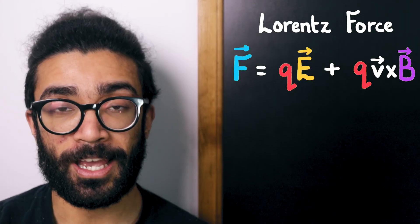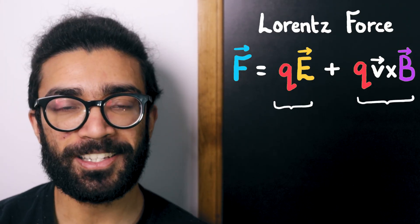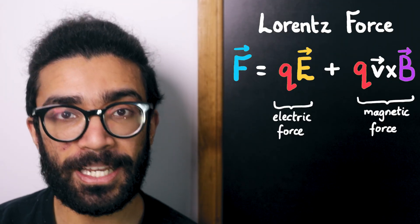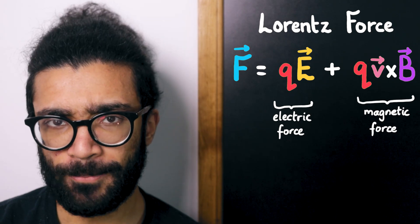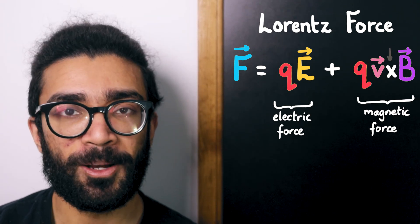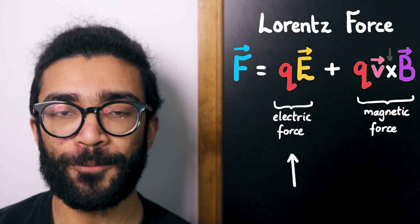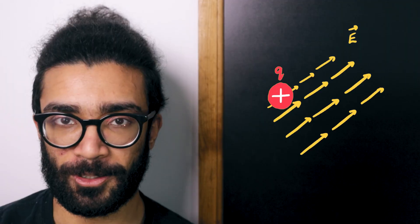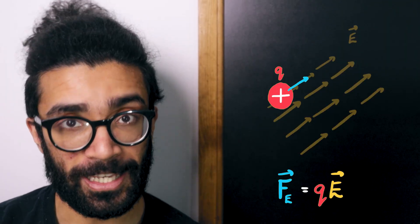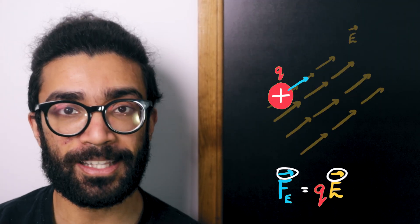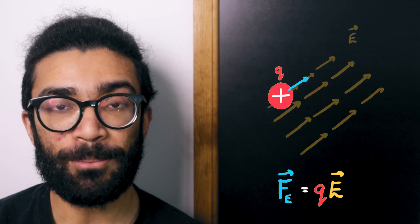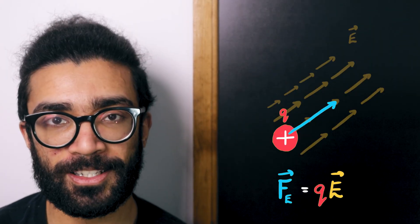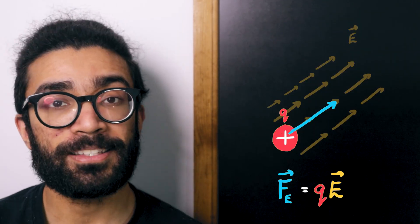What we've got are two separate terms: F equals QE plus QV cross B. What we're seeing here is simply a sum of two different forces — this is the force exerted by the electric field on our small charged particle, and this is the force exerted by the magnetic field. The force exerted by the electric field is QE. If we have a particle with charge Q placed in an electric field, the force that this particle experiences is Q times the strength of the electric field E. We also make this a vector equation, so the direction of the force is included. The stronger the field, the stronger the force, and the direction of the force is in the same direction as the field lines.